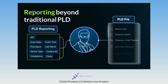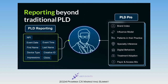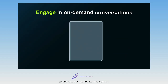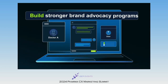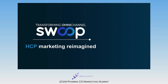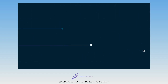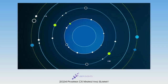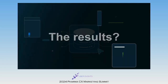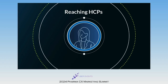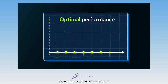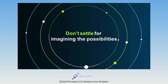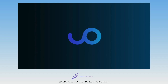Picture machine learning modules evaluating HCPs, giving you a comprehensive HCP assessment far beyond traditional PLD exposure data. How about the ability to have conversations with HCPs who have strong influence on their peers and patients to help you build stronger brand advocacy programs? Well, you no longer need to imagine. Swoop has reimagined HCP marketing and measurement with proprietary AI and machine learning technology, connecting fragmented data and media ecosystems, and putting powerful analytics at your fingertips. The results? Pinpoint accuracy in reaching HCPs and their patient population. Omni-channel data consistency. Improved patient outcomes. Optimal performance. And unprecedented insights. Don't settle for imagining the possibilities. Swoop — Transforming Omni-Channel.